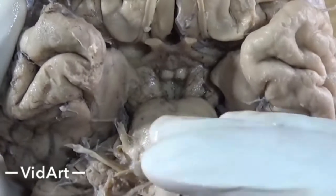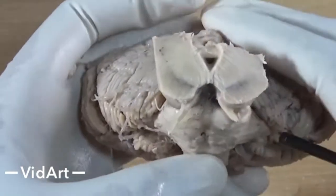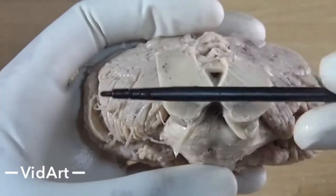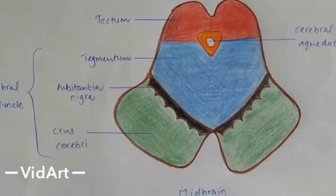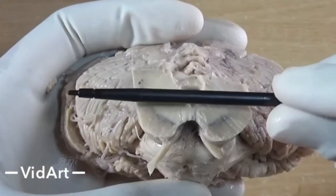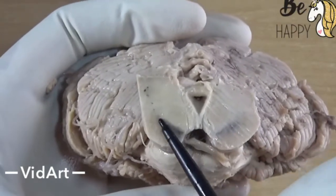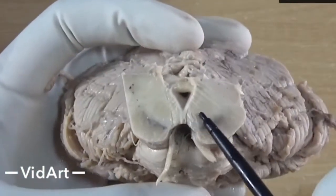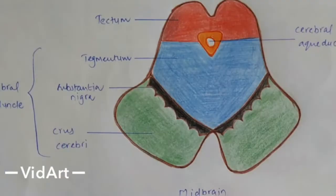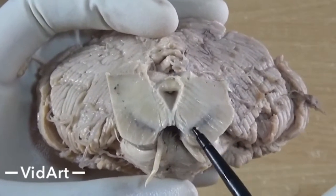In the cross-section of the midbrain, the cerebral aqueduct is the cavity, connected above to the third ventricle and below to the fourth ventricle. Imagining a horizontal plane through the cerebral aqueduct, the cross-section divides into a ventrally oriented cerebral peduncle and a dorsally oriented tectum. Each cerebral peduncle is further divided by the substantia nigra — a brownish-gray sheet of gray matter extending from the upper pons to the subthalamic region — into tegmentum, substantia nigra, and crus cerebri.